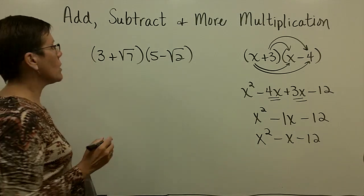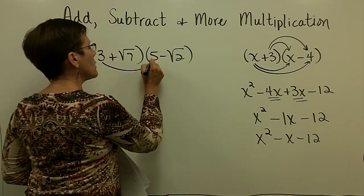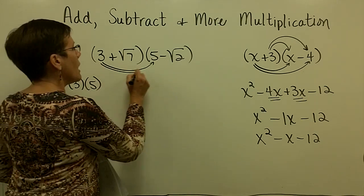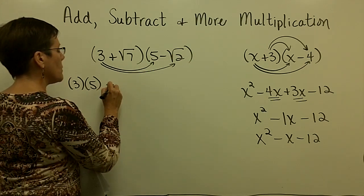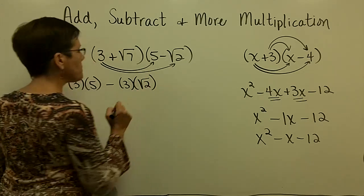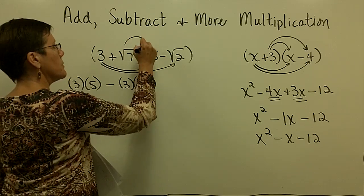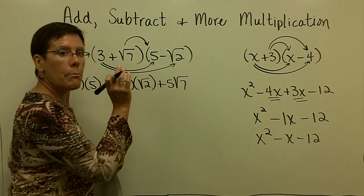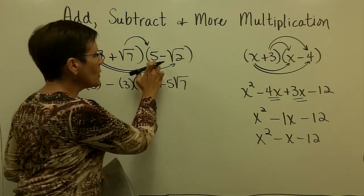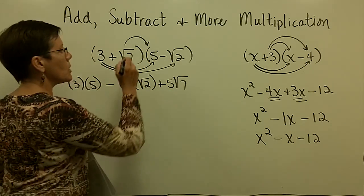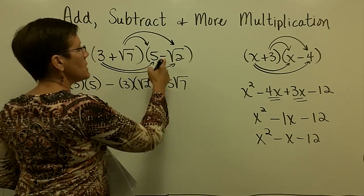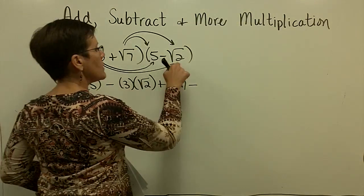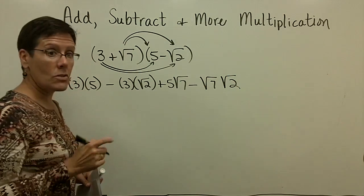Let's do the same thing with radicals and write it fully out. We take 3 times 5, which is 15. Then this 3 times negative square root of 2 gives a minus sign: 3 times the square root of 2. Here I have plus times plus, so a plus, and I put the 5 in front times the square root of 7: 5 times the square root of 7. They're not both under a radical, so I can't call them the square root of 35 — this integer goes in front of the radical. Then a positive times a negative is a negative, and the square root of 7 times the square root of 2 is the square root of 14.